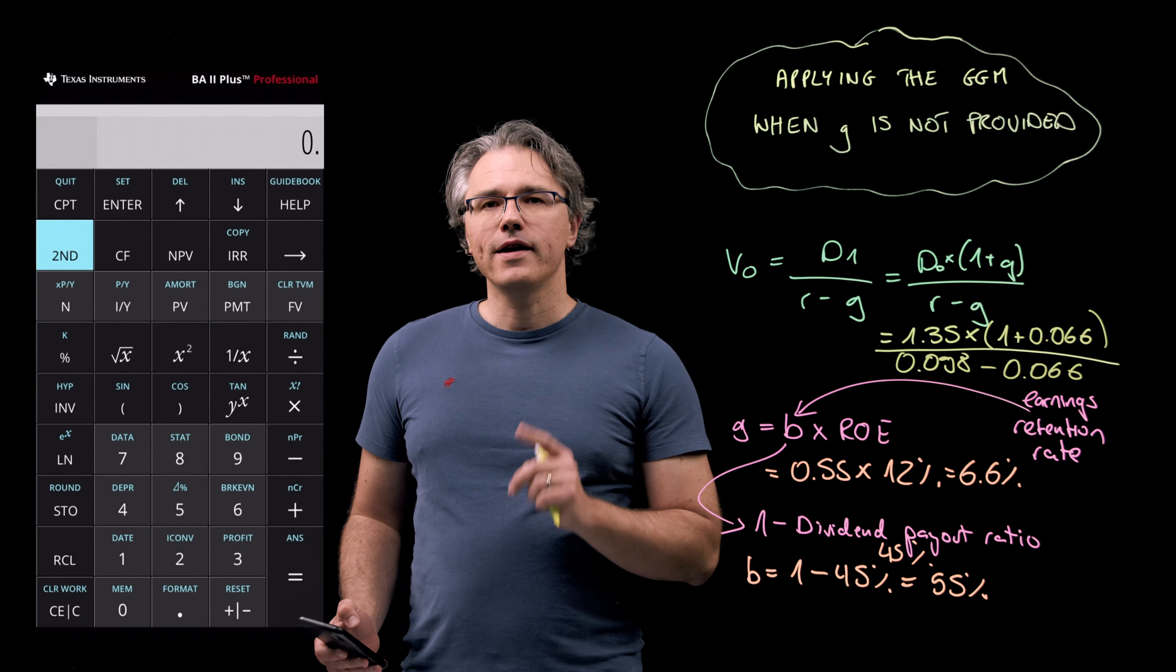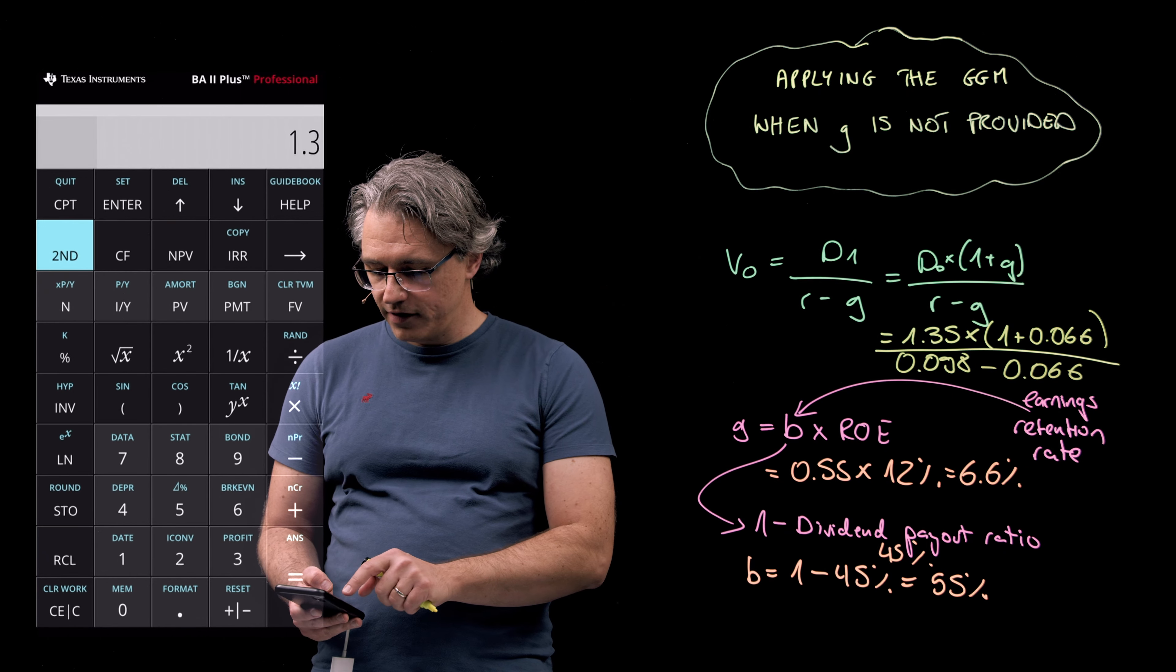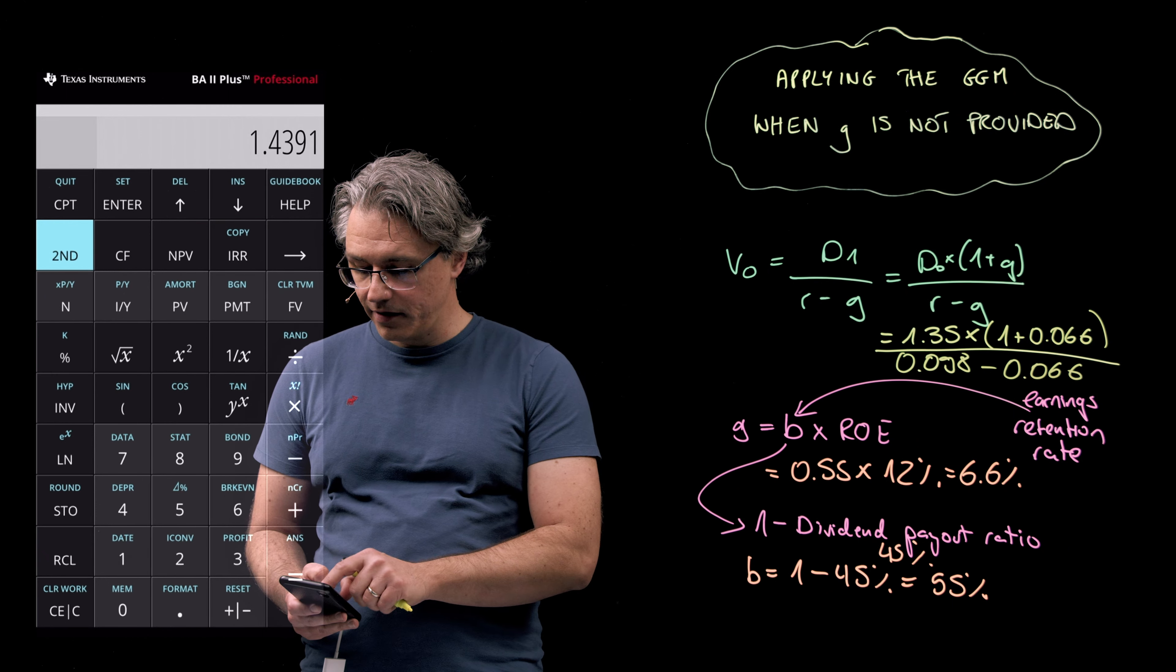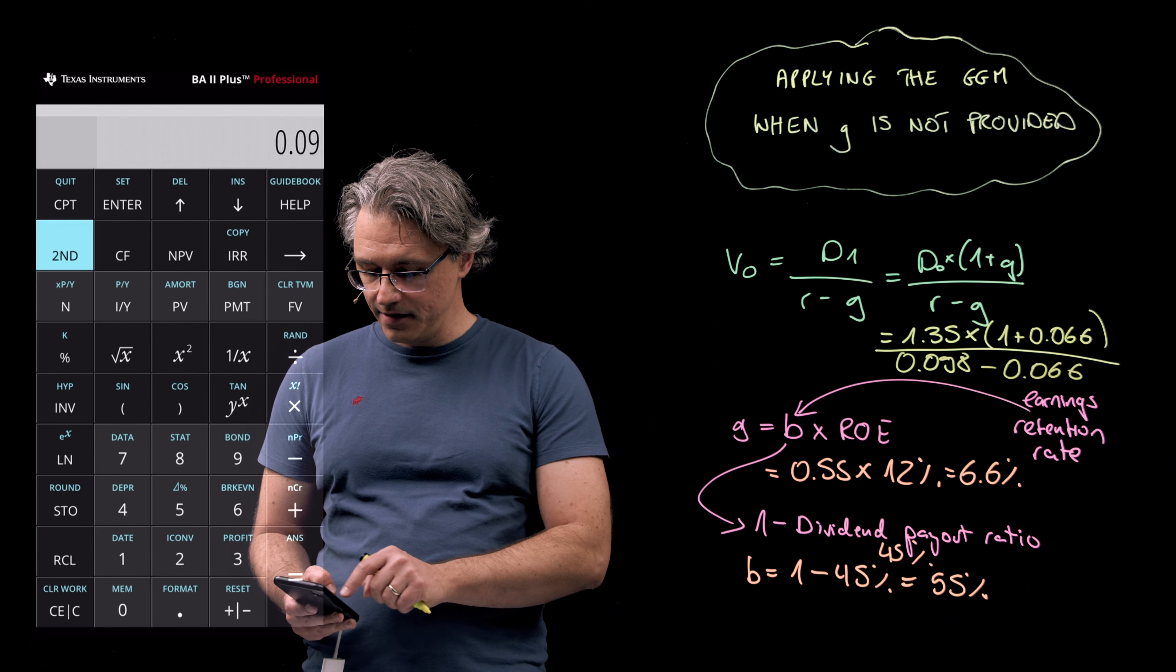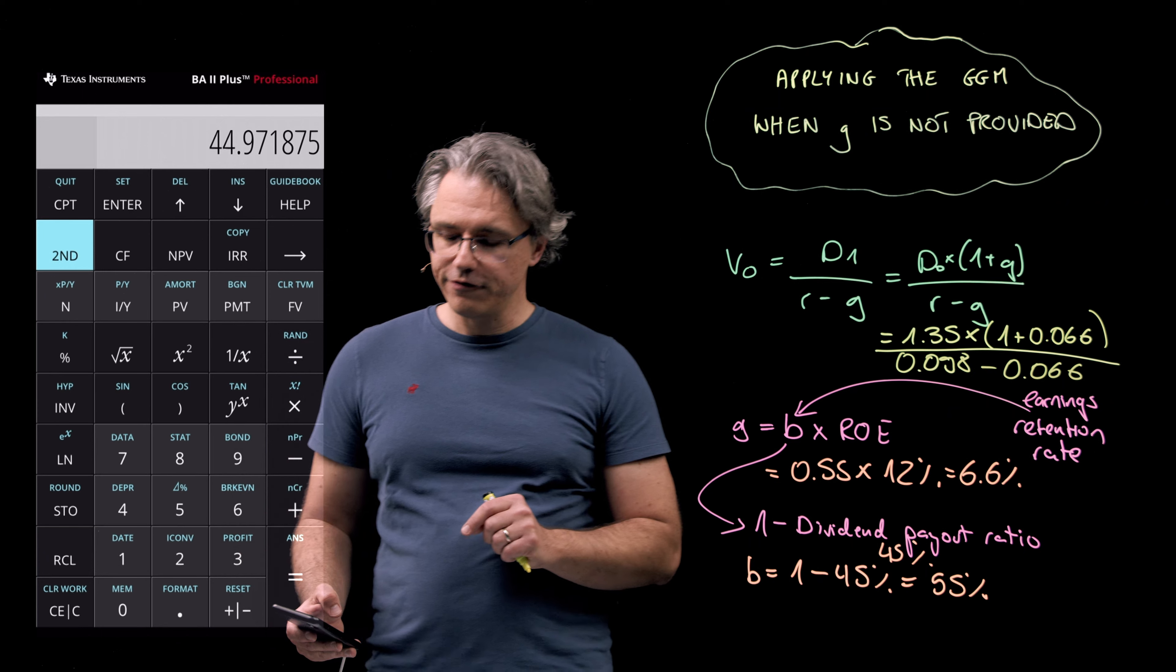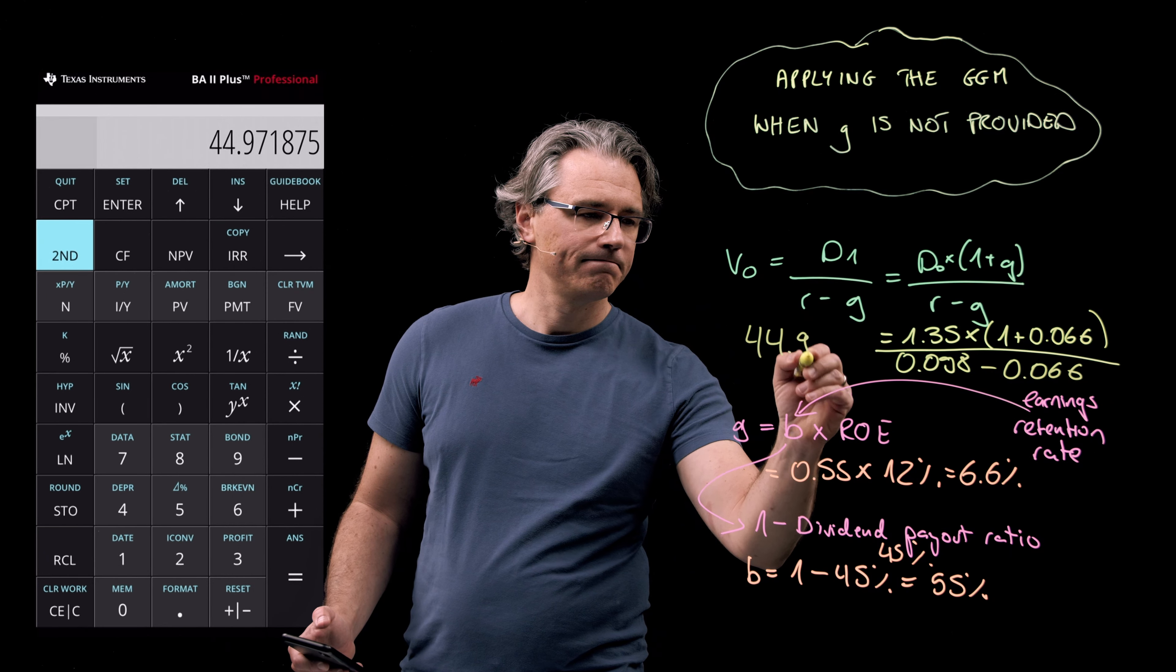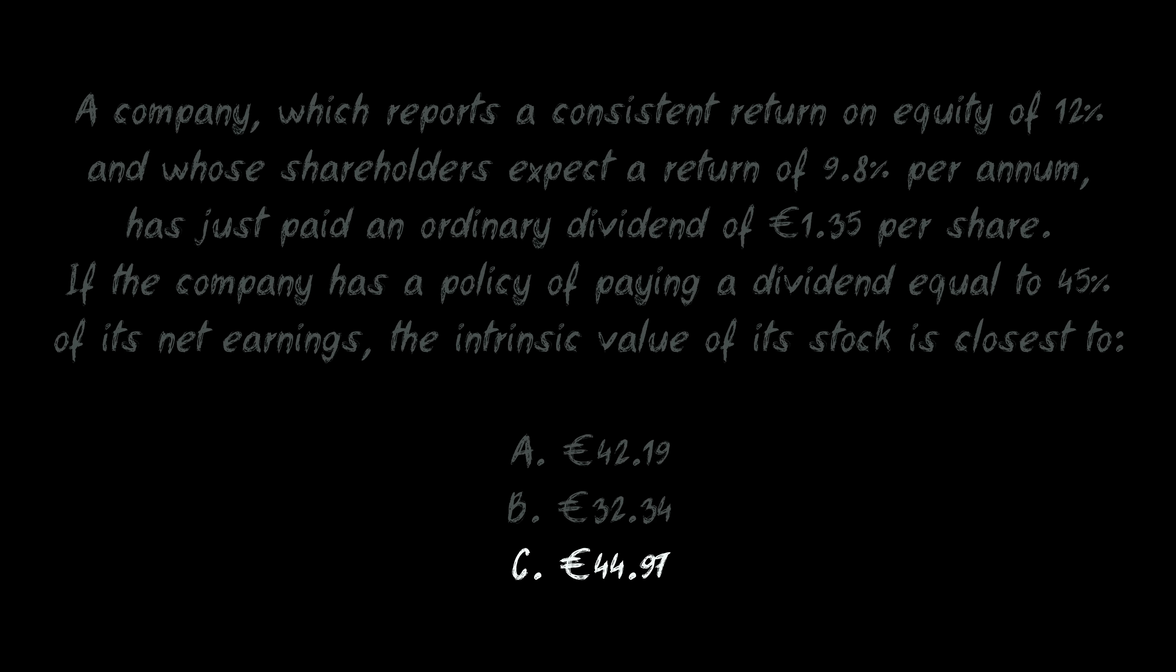Performing this on the calculator, I get an answer of, let's check, 1.35 times 1.066 divided by, open a bracket, 0.098 minus 0.066, close bracket, 44.97. And this is very much in line with answer C.